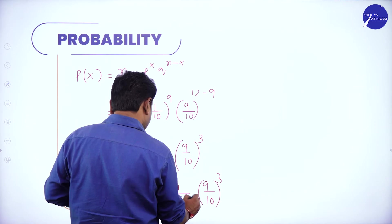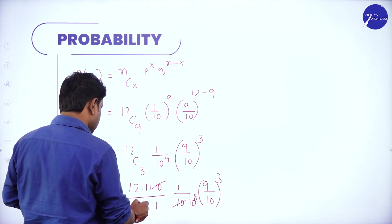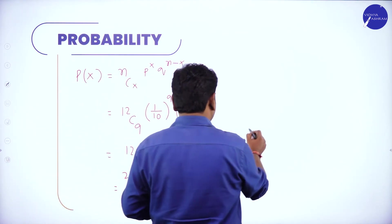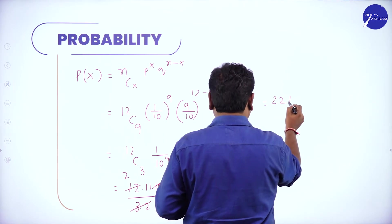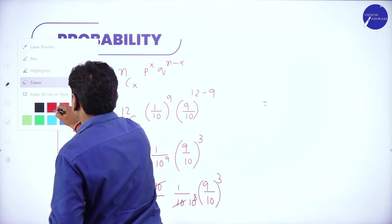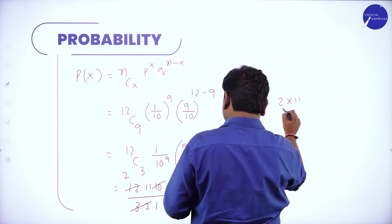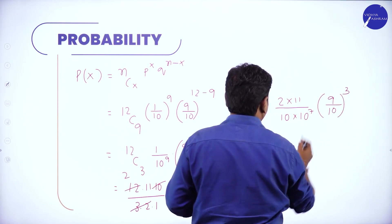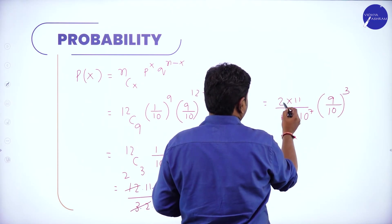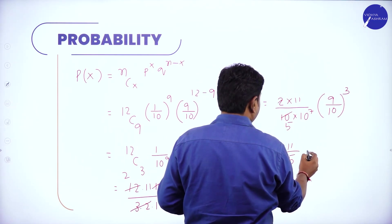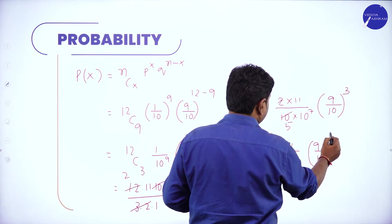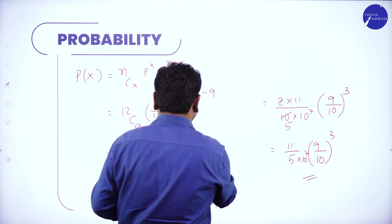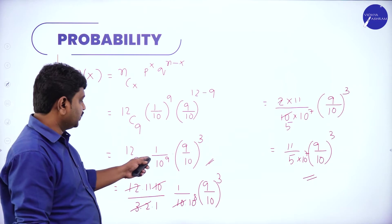Further simplification: canceling factors gives (11/5) × (9/10)^3 × (1/10)^7. You can leave the answer at this stage. The key is correct logic and substitution — don't make calculation mistakes. The answer can be left in this simplified exponential form.